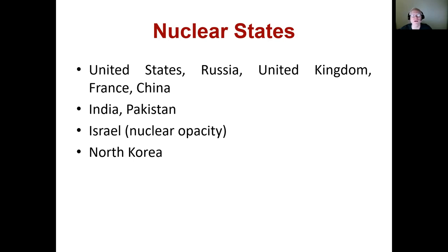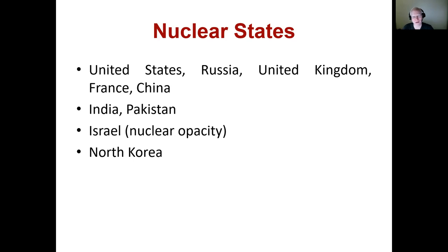Israel — hard to say exactly when Israel got nuclear weapons — has this structure of nuclear opacity, meaning everybody knows that Israel has nuclear weapons, but Israel doesn't come out and say it. This is strange from a deterrence standpoint, because typically for deterrence to work, the other side has to know you have capabilities. So not flaunting nuclear weapons seems strange. But Israel is also worried about provoking other states in the region from developing nuclear programs of their own.